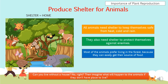Most animals prefer living in the forest because they can easily get their source of food. For example, monkeys can easily get bananas there, and birds can easily get worms in the soil. Now, I want you to imagine — can we humans live without a house? No, right? Because we need shelter to keep ourselves safe from heat, cold, and also rain. Then, can you imagine what will happen to animals if they don't have a place to live? It's very sad, right?